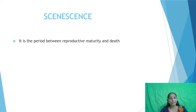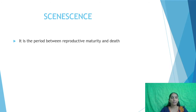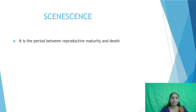The phase in which an organism has reproduction capacity and is capable of gamete formation is called the reproductive phase — involving reproduction and fertilization. After the reproductive phase, the organism enters the next phase called senescence.